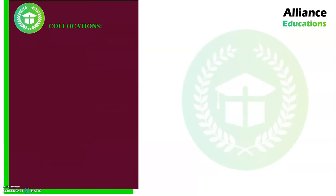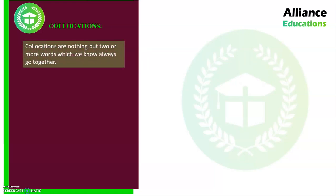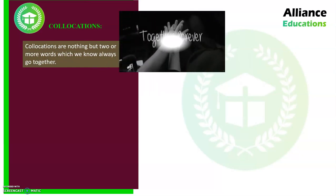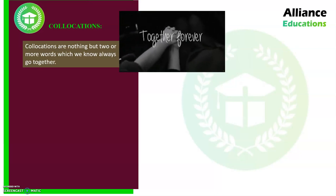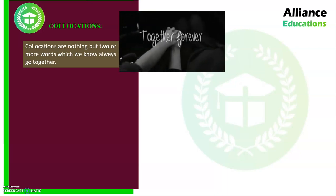Let's start with a basic definition of collocations. Collocations are nothing but two or more words which we know always go together. There are certain word sets in our language which you will find are consistent throughout.